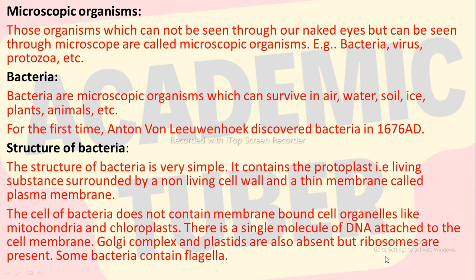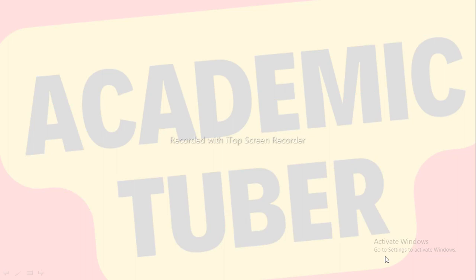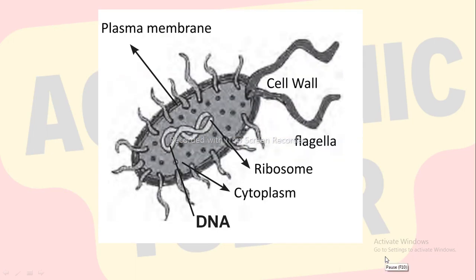Some bacteria contain flagella that help in locomotion. Bacteria are the most primitive and smallest cellular organisms. They are single-celled and usually spherical, rod-like or spiral in shape. Their average size ranges from 0.5 to 10 microns. They contain a distinct cell wall made up of proteins and carbohydrates, and generally they contain thread-like structures originated from the cytoplasm. The nucleus is not covered by nuclear membrane. The nuclear material is present in the form of staining bodies called chromatin materials.